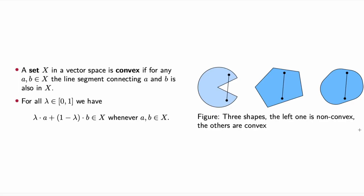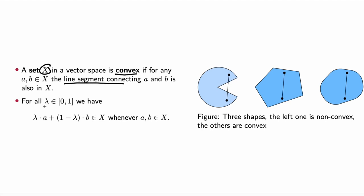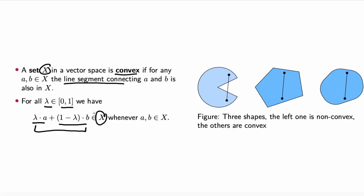The property of convexity is related to convex sets. A set X is said to be convex if, for any two elements A and B from this set X, the line segment connecting A and B is also contained in this set X. Mathematically, this means that for all lambda between 0 and 1, lambda times A plus 1 minus lambda times B needs to be in X, for every A and B that are also in X.